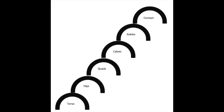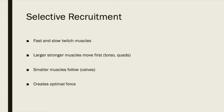Sequential force summation is the transfer of force from one muscle group to another to achieve optimal force. As seen in the diagram, the torso moves first, followed by the hips, before force is transferred into the hamstrings, quads, calves and ankles before striking the ball. If done out of order or not in optimal timing, the optimal force and momentum won't be reached and the ball won't go over the wall. Force summation sequentially aligns muscle contractions to generate optimal force, while selective recruitment selects fast and slow twitch muscles. The larger, stronger muscles move first, transferring to the next body part, followed by the smaller muscle groups, so the transfer of momentum is achieved.